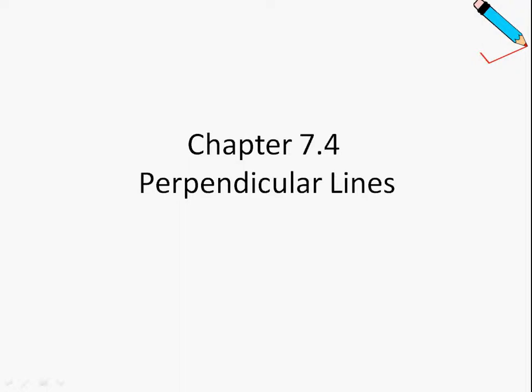Before we go on to do the example, just want to help you recap a little bit. If we say that two lines are perpendicular, suppose we call this L1 and this line L2, then the gradient of L1 times the gradient of L2 will give me negative 1.